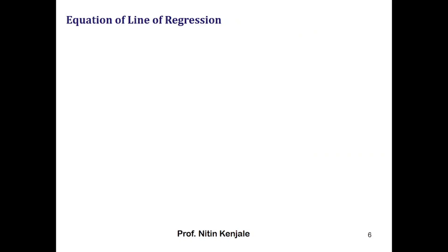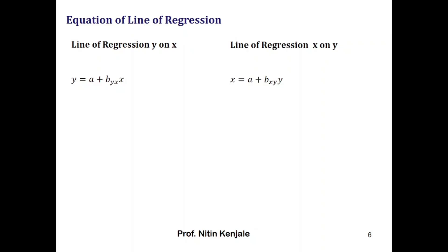The equation of the line of regression y on x is given by y equals a plus byx times x, whereas the line of regression x on y is given by x equals a plus bxy times y. Here y is the dependent variable and x is the independent variable; conversely, x is the dependent variable and y is the independent variable in the line of regression x on y. Here byx is called the regression coefficient of y on x, whereas bxy is the regression coefficient of x on y. We will treat a and b as constants for now.